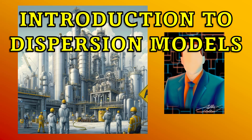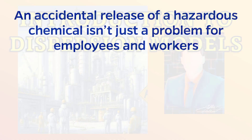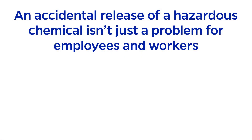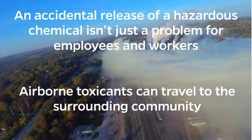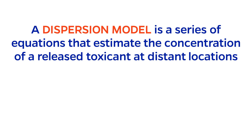Welcome to Chemical Process Safety. This video is an introduction to dispersion models. An accidental release of a hazardous chemical isn't just a problem for employees and workers in the chemical plant. Consider that a released chemical might be airborne and therefore will not be confined to the area that it was released. Furthermore, for many toxicants, a very low concentration is enough to pose a threat to human health and safety. Therefore, the surrounding community is also at risk. The goal of a dispersion model is to estimate the concentration of a released toxicant at a distant location from the release.